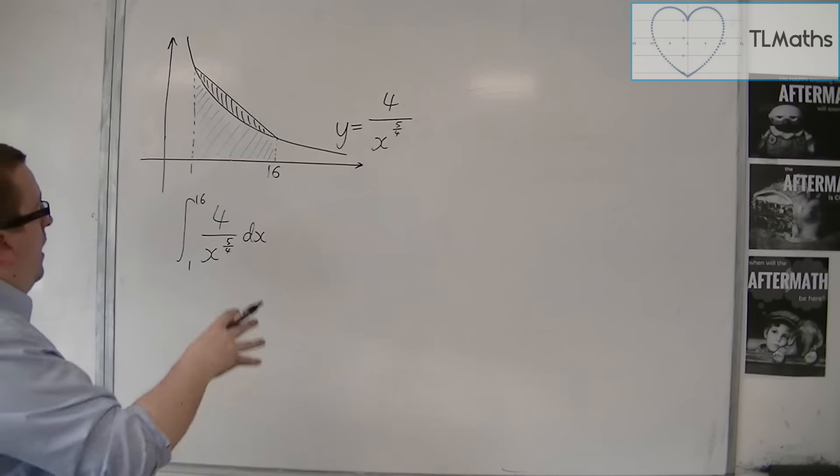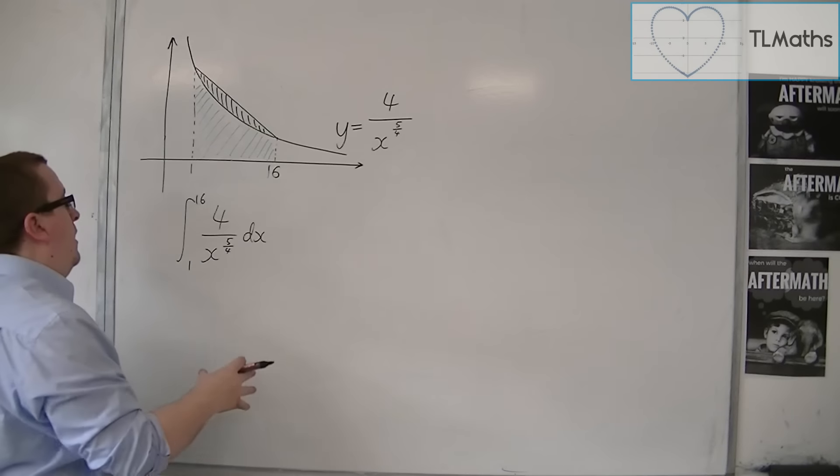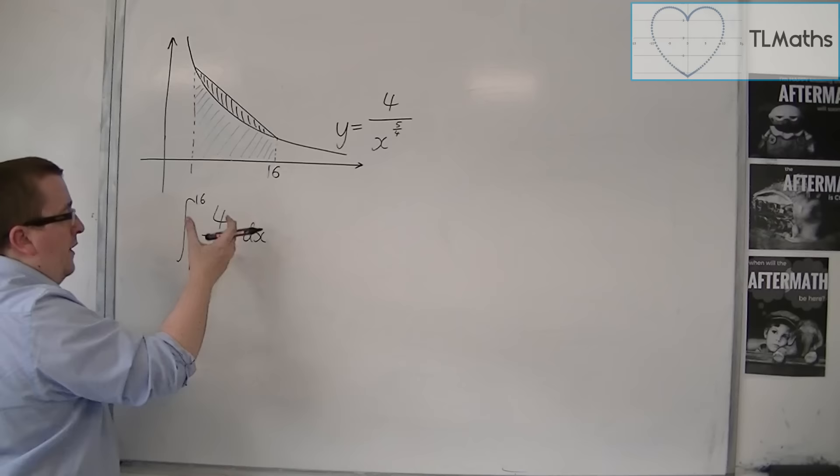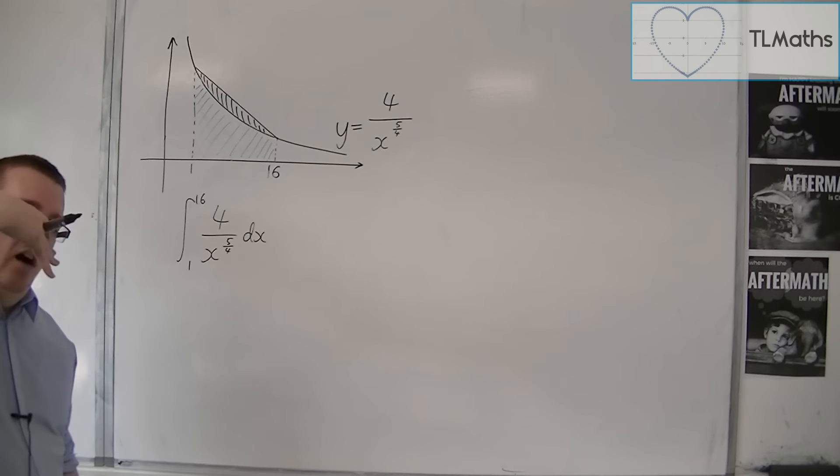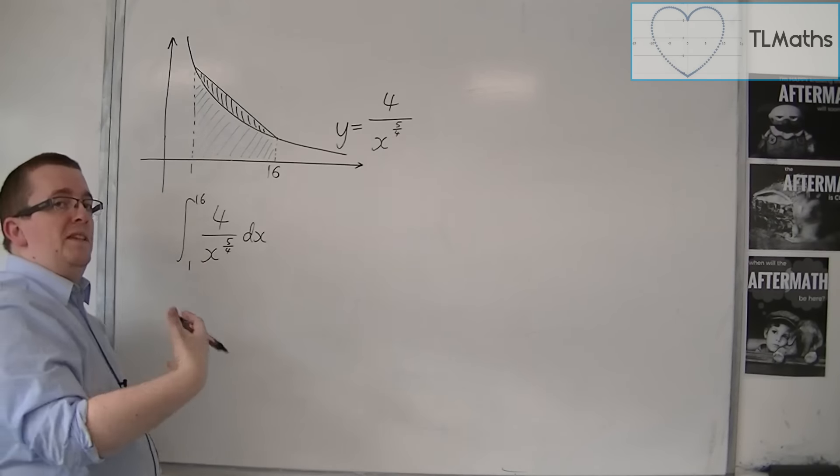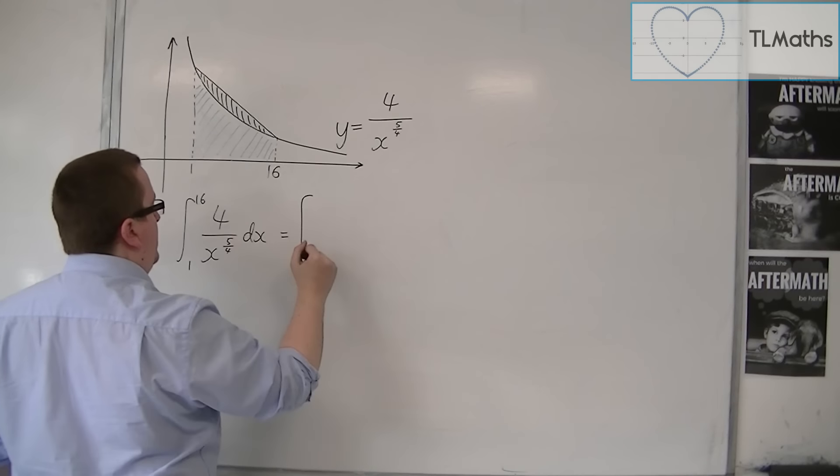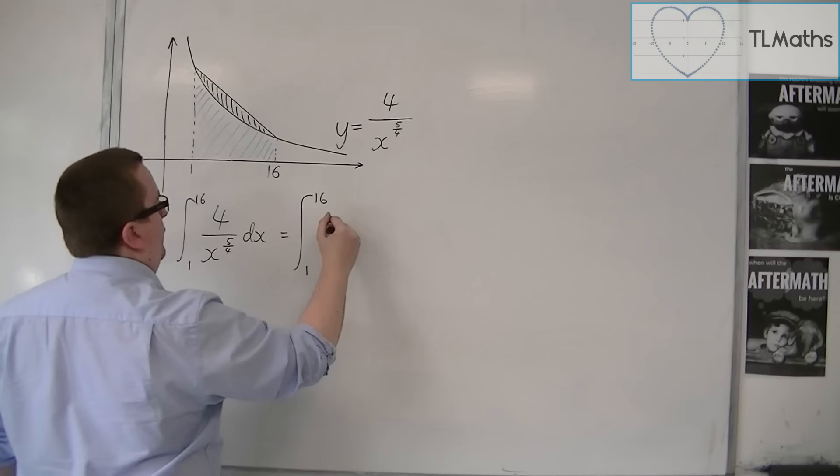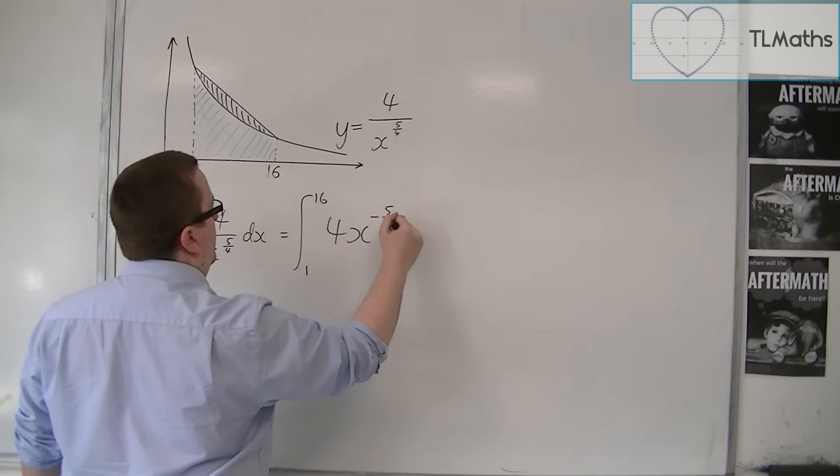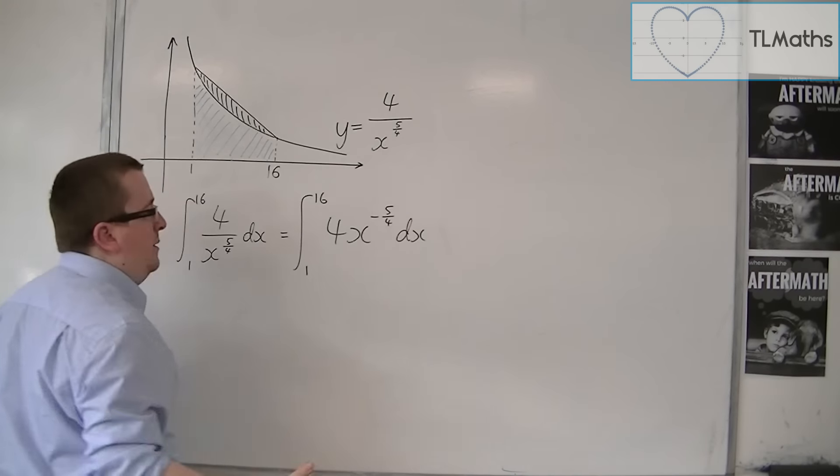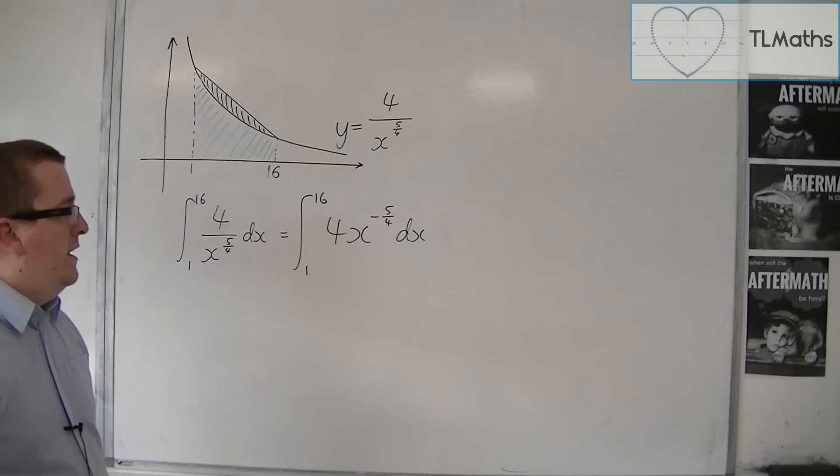So I can't integrate it like that. I don't want this 4 over x to the 5 quarters business, I want it as 4 times x to the power of something. OK, so I am going to instead write this as 4 times x to the minus 5 quarters. And now I'm in a position where I can integrate it.